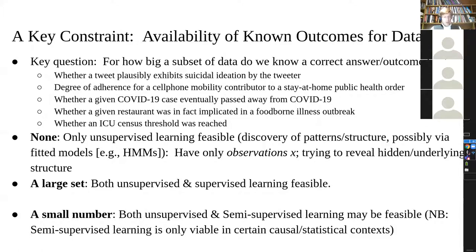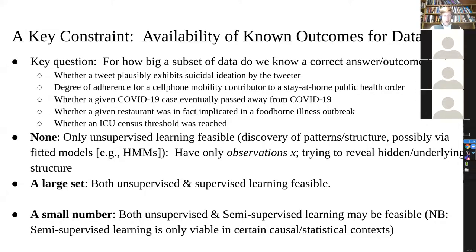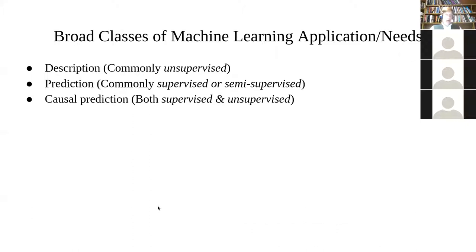If we have a large set of labeled data, we can do more than unsupervised learning — we can find latent structure, do clustering, and we can engage in supervised learning. We can try to get our machine learning model to come up with its own recipe for predicting very accurately — with high sensitivity and specificity — whether this is a restaurant likely to have a foodborne illness outbreak, or whether a person based on a tweet has major depressive disorder versus not. If we have a small number of labeled examples, both supervised and semi-supervised learning might be possible, where semi-supervised learning is only viable in certain causal or statistical contexts.